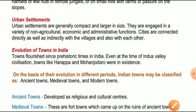Now the next topic is urban settlement. Urban settlements are generally compact and larger in size - जो शहरी बस्तियां होती हैं, वो बहुत घनी होती हैं और आकार में बड़ी होती हैं। They are engaged in a variety of non-agricultural, economic and administrative functions. गाँव की बस्तियां खेती और primary activities में लगी होती हैं, जबकि शहरों की बस्तियां मुख्य रूप से गैर-कृषि कार्यों में - specially आर्थिक और प्रशासनिक कार्यों में लगी होती हैं। Cities are connected directly as well as indirectly with villages and with each other through transport and communication.